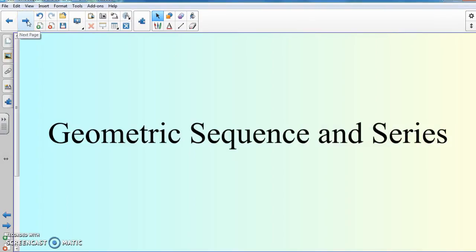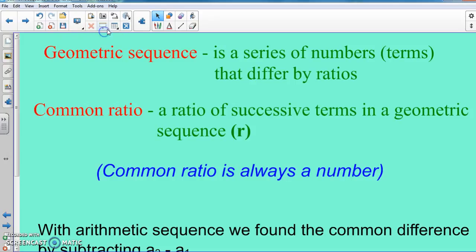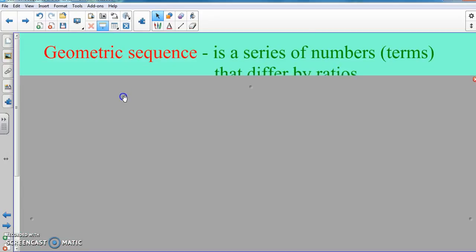So let's start off with some vocabulary, and there's a bunch right there. So here's the first word, geometric sequence. For geometric sequence, it's gonna be a series of numbers or terms that differ by a common ratio.